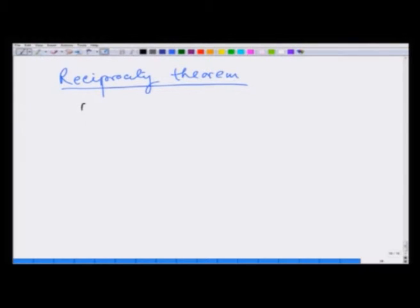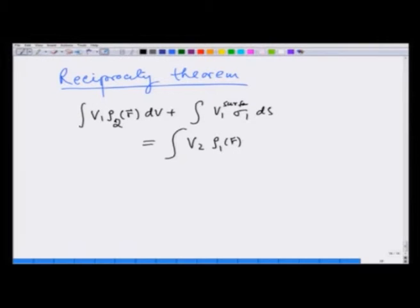The theorem says that given the same geometry of conductors, a charge distribution rho 1 which gives rise to potential v 1: integral v 1 rho 1 dv plus surface term v 1 surface sigma 1 ds is same as integration v 2 rho 1 dv plus v 2 surface sigma 1 ds. It relates the charge distribution and potential in one situation to the other.